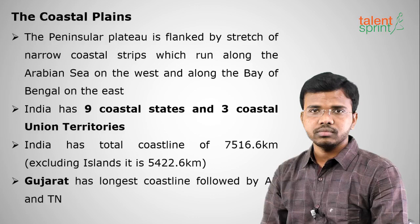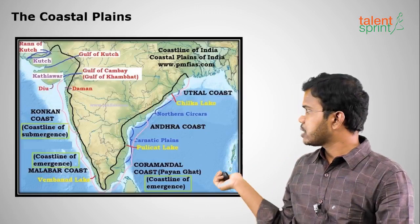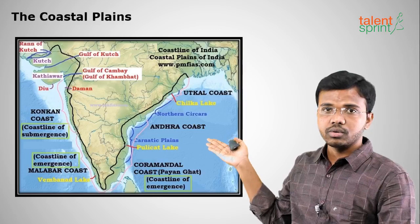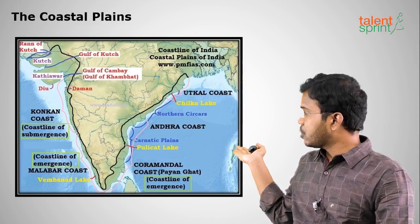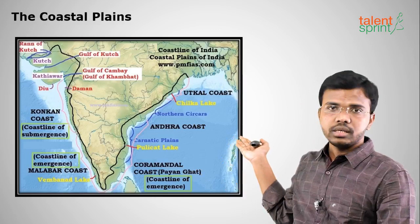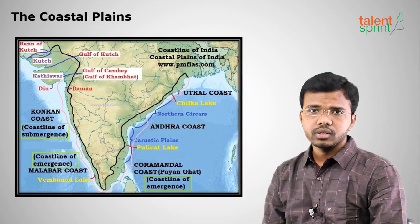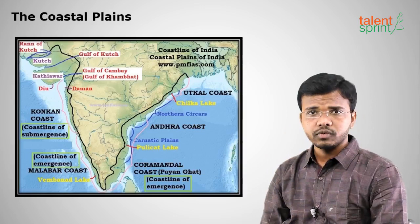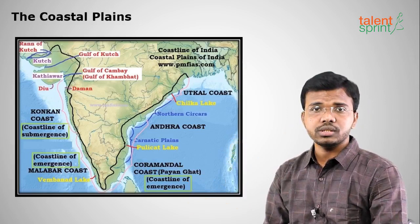India has a total coastline of 7516 kilometers, of which about 5400 kilometers belong to states and UTs, and the rest to islands. The major coastal plains are: Malabar Coast for Kerala, Konkan Coast for Goa, Kannada Plain for Karnataka, Coromandel Coast for Tamil Nadu and parts of Andhra Pradesh, and Northern Circars for parts of Andhra Pradesh and Odisha.